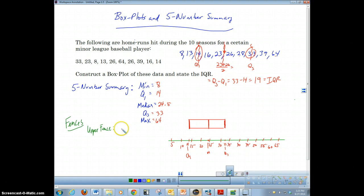To find the upper fence, we're going to take the third quartile and add it to 1.5 times the IQR. So that's 33 plus 1.5 times 19, which gives us 61.5. For the lower fence, we're going to take Q1 and subtract 1.5 times the IQR. That's 14 minus 1.5 times 19, which gives us a lower fence of negative 14.5. So anything above 61.5 is going to be an outlier.